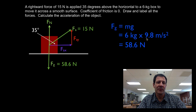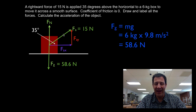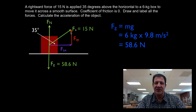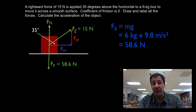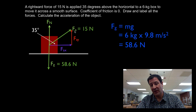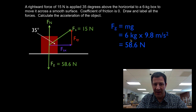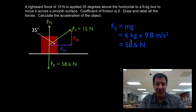You might be tempted to use 58.6 Newtons for the normal force, but with an applied force at an angle, the gravitational force and the normal force are not going to be equal and opposite. When you pull something at an angle, you're actually lifting it up a little bit. The weight of the object doesn't change, but the normal force will not equal the weight. So we need to calculate FAY and FAX.